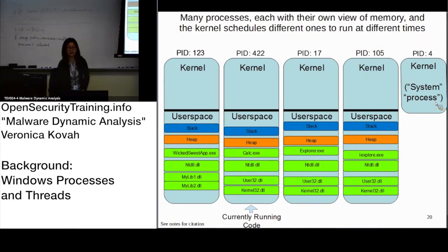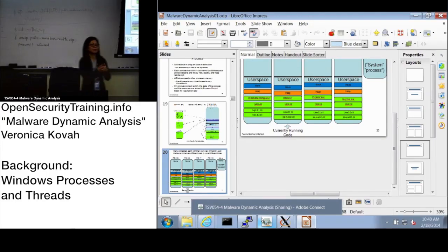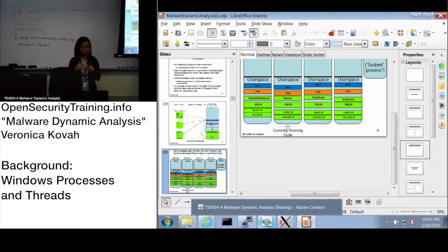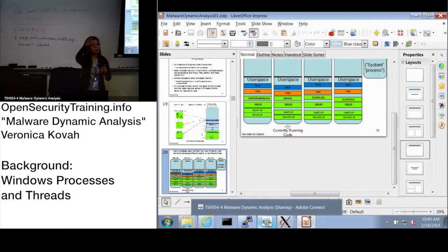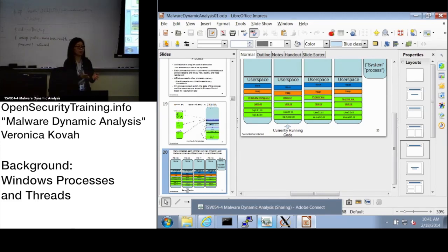In general, one process cannot read memory from a different process — that's the important part. Code belongs to the .text section, initialized global variables belong to .data, and uninitialized variables (initialized to zero) belong to the .bss section. That's a convention, but compilers don't have to follow it. The PE parser or loader can understand even if they don't follow the convention.